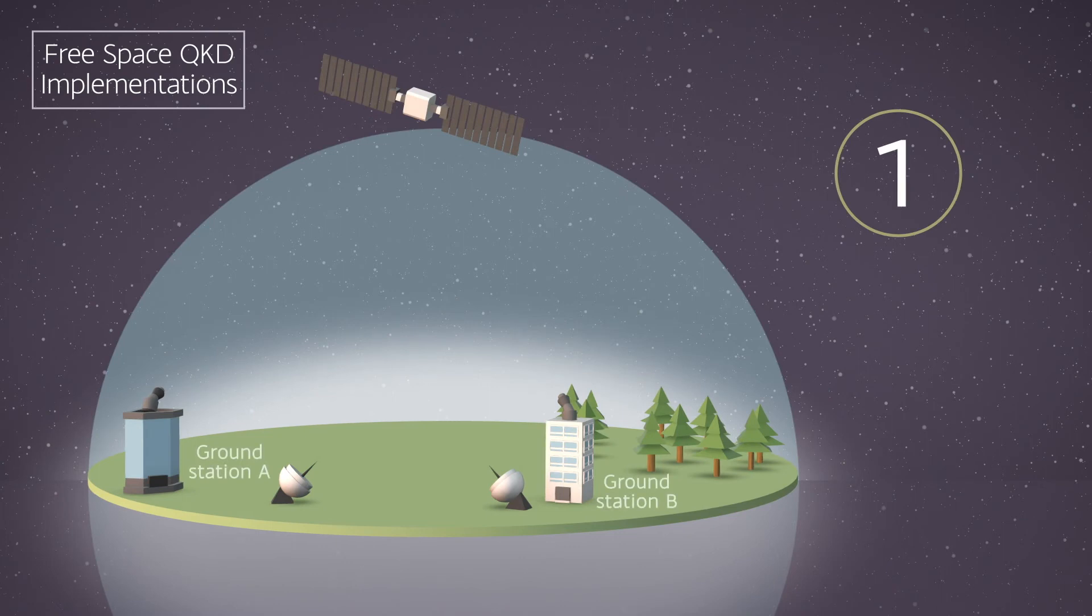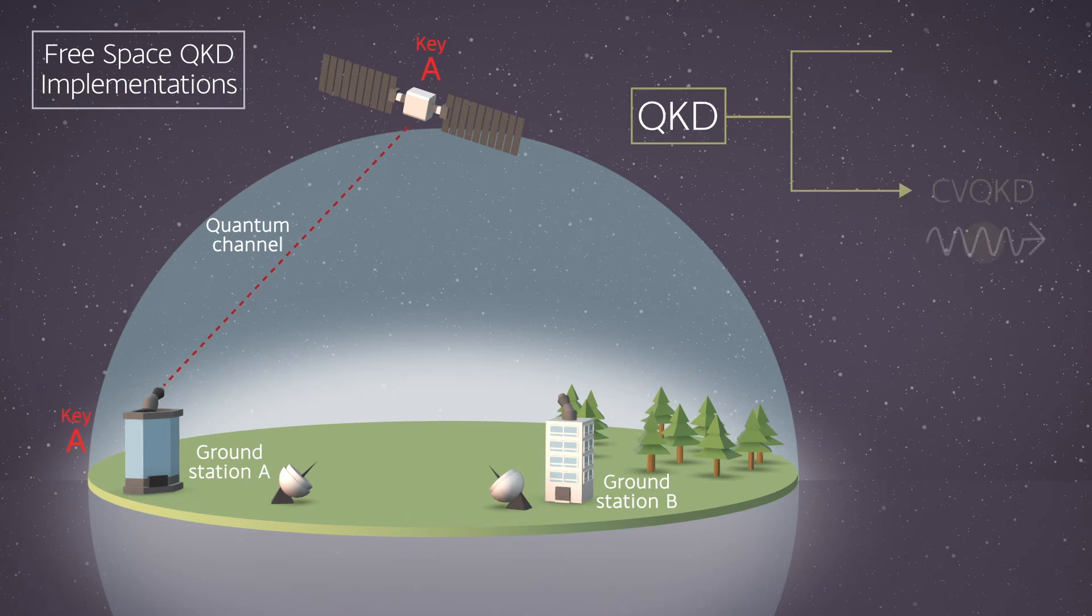This is a process to share a common key between two independent optical ground stations. One: The haps, the satellite in the image acting as a transmitter, performs QKD with an optical ground station, sharing key A. The QKD signal can be either a continuous or discrete variable protocol.